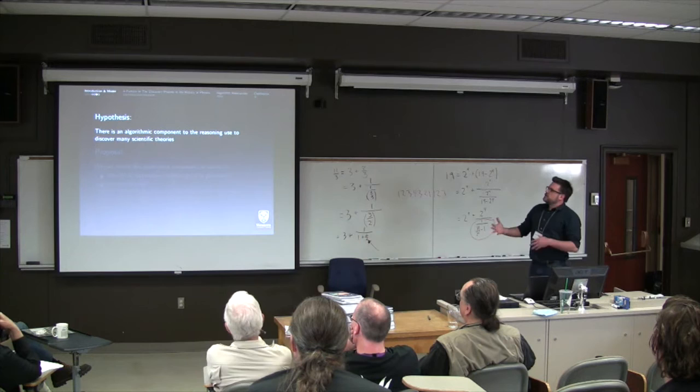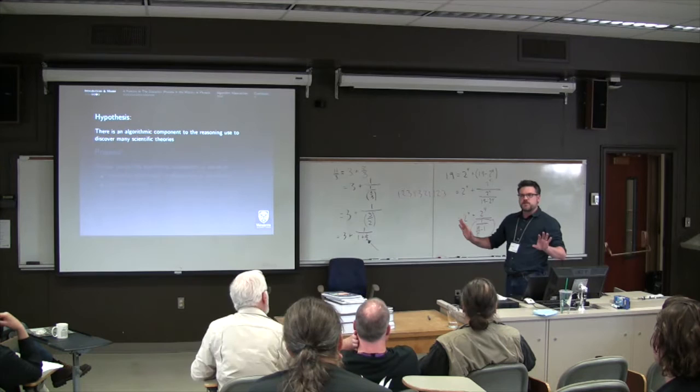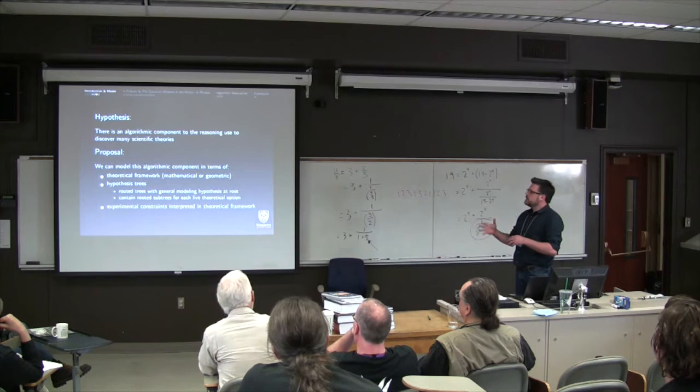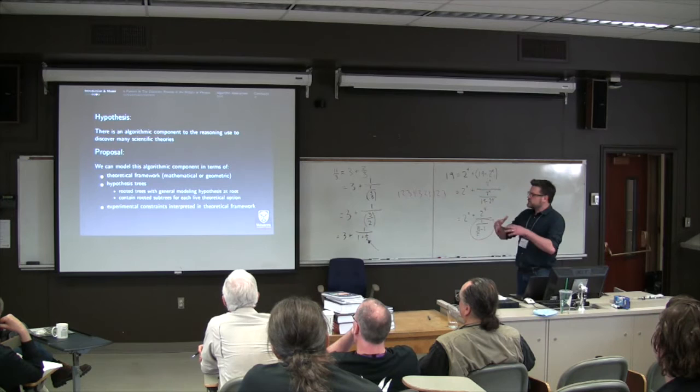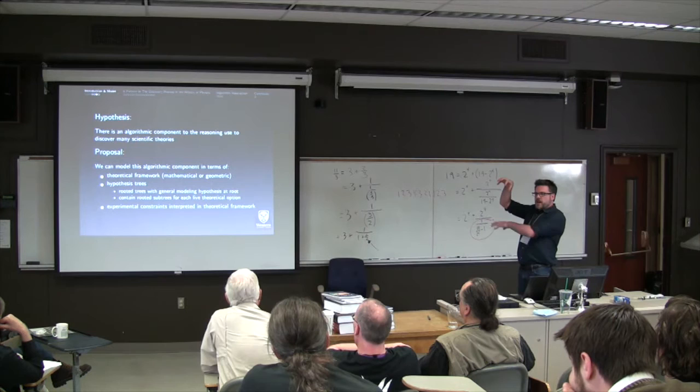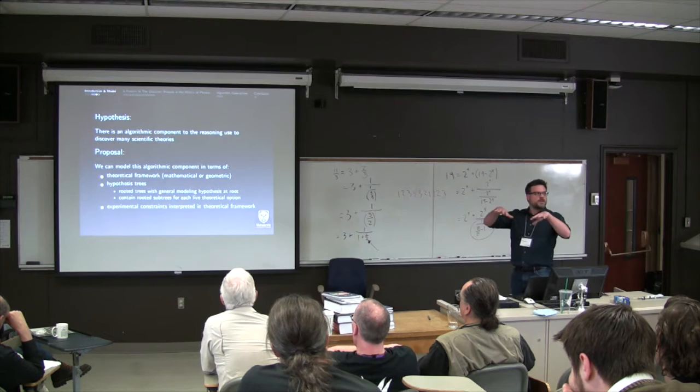So my approach is to pick the mathematical and geometric aspects of theory construction, something definite you can pin down, and show that a simple algorithm can reconstruct the basic methodological patterns. And I'll try and get the bona fide algorithm that does it. My hypothesis: there's an algorithmic component to the reasoning used in discovering many scientific theories. And I'm going to give two examples, one in optics and one in electromagnetic theory. So I'm not saying the whole process is algorithmic. I'm saying there's a component of it that's algorithmic. My proposal: we can model this algorithmic component in terms of the theoretical framework, which could be mathematical or geometric. You need geometric for Faraday's work, as you'll see.